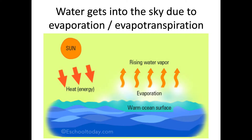Water gets into the sky due to evaporation or evapotranspiration. The only difference between those two processes is that evaporation is from any surface except plants, and evapotranspiration is evaporation from plants — that's the only reason we've got two words. So that's how the water gets into the sky, and at this point it is a vapour, a gas, and water vapour is invisible.